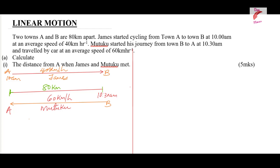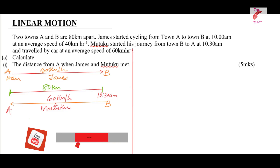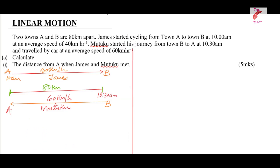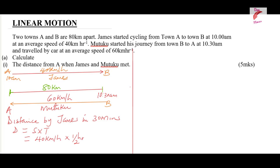The first thing we're going to do is get the distance covered by James in 30 minutes. James started the journey at 10 a.m. whereas Mutuko started at 10:30 a.m., so James had traveled 30 minutes before Mutuko began. The distance is given by speed times time: 40 kilometers per hour times half an hour, so he traveled 20 kilometers.